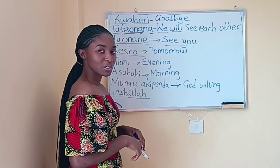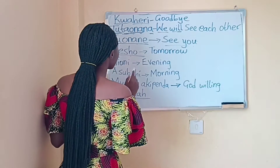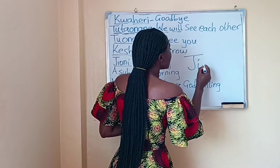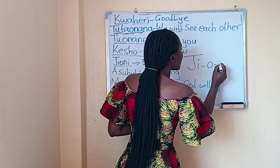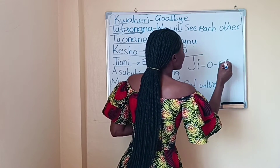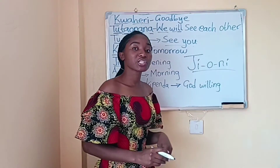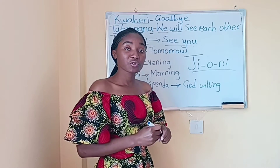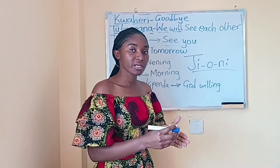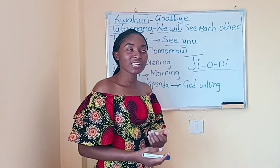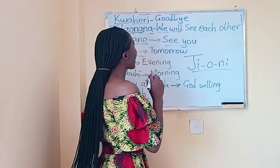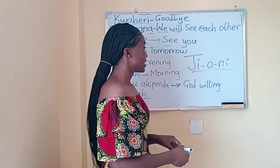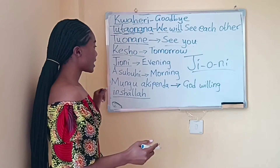Maybe you want to see that person in the evening. The word for evening is jioni. So if you're going to see that person again in the evening, you can say: kuahiri tuonane jioni — goodbye, see you in the evening.